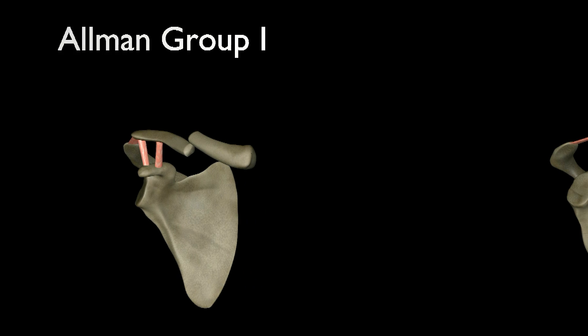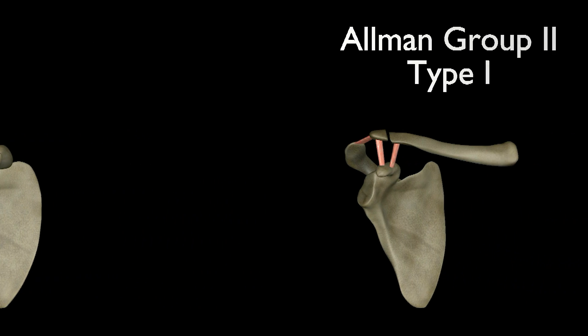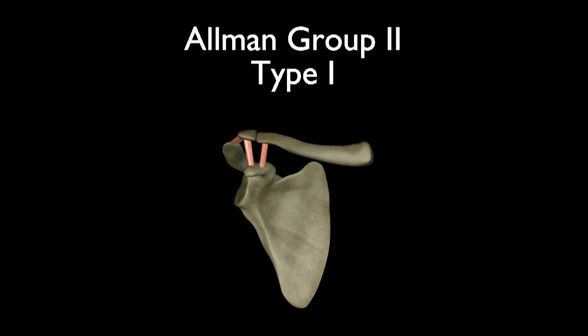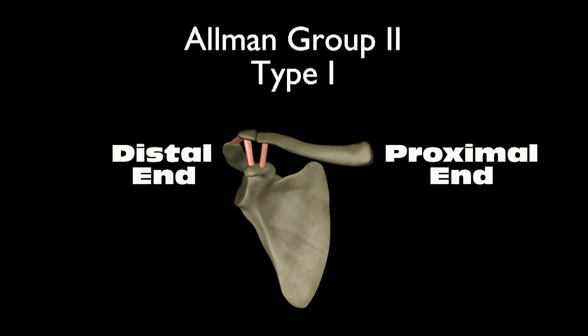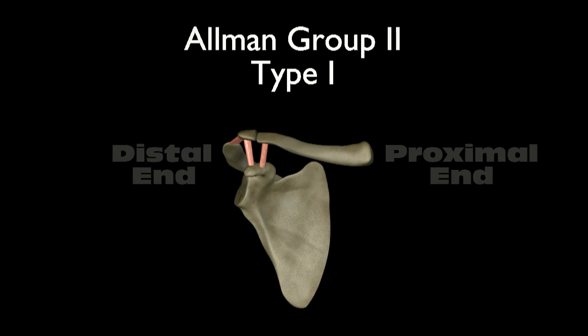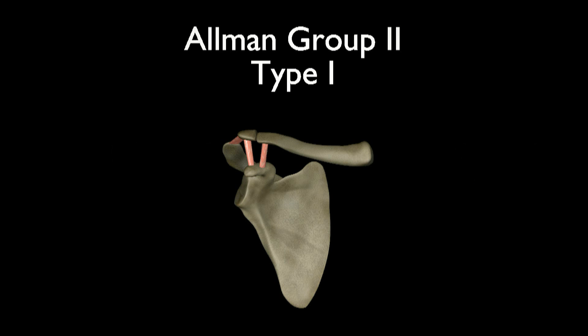Group 2 fractures are fractures that occur at the distal end of the clavicle, which is the end nearest the shoulder joint. Group 2 type 1 fractures are minimally displaced. The ligaments that hold the clavicle to the scapula are still intact, and these fractures can usually be treated without surgery.